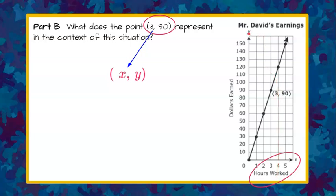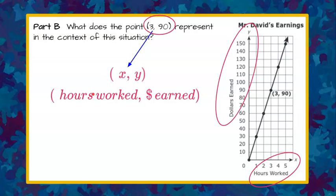The y-axis represents the dollars earned by Mr. David. So we can replace our x coordinate and y coordinate with these words. The x coordinate represents the hours worked and the y coordinate represents the dollars earned, which I got right from my graph.